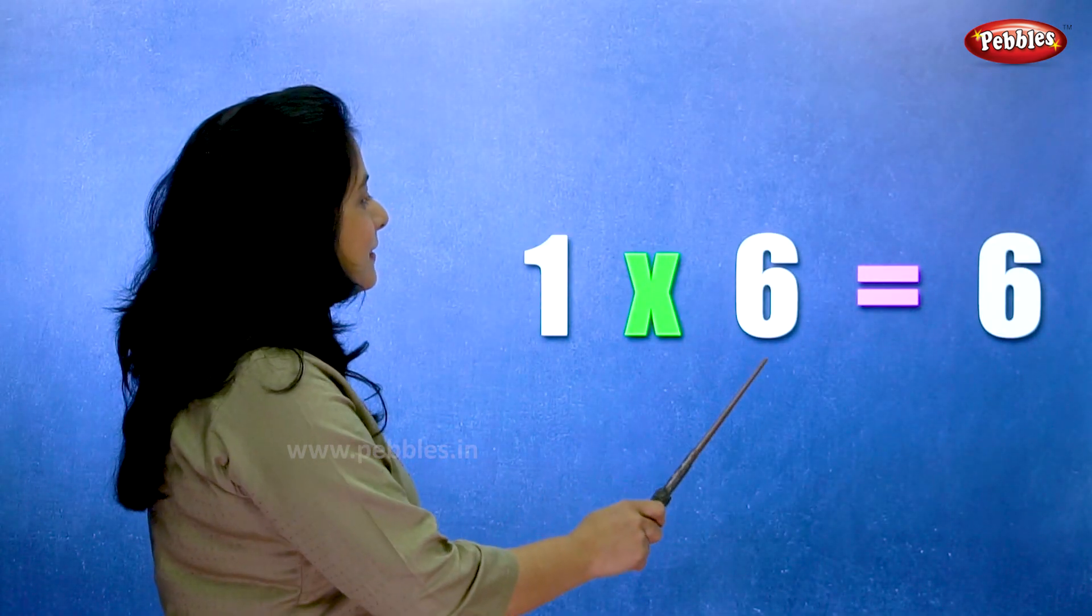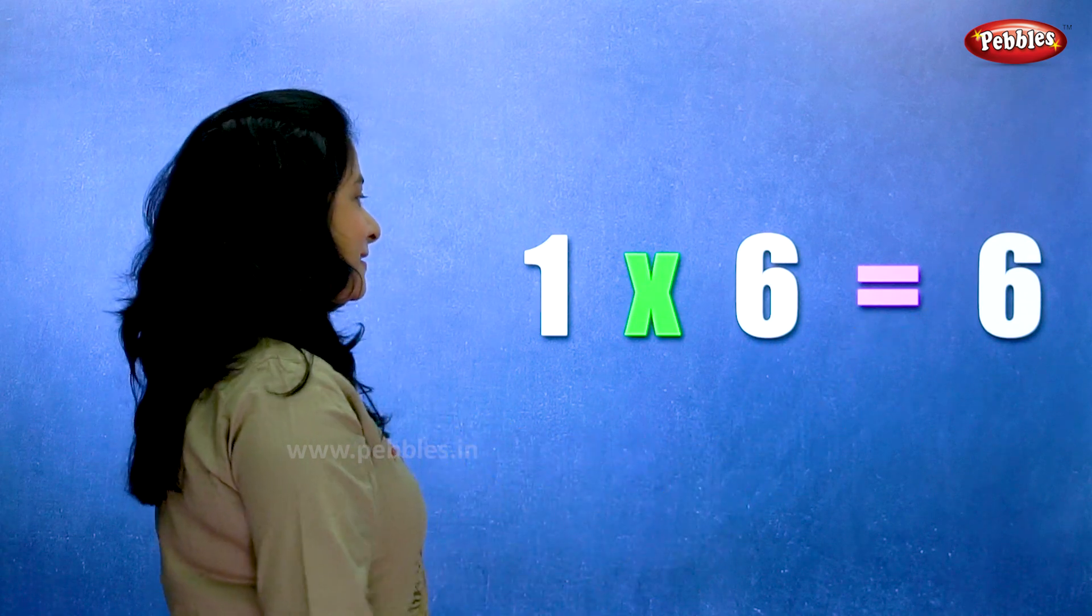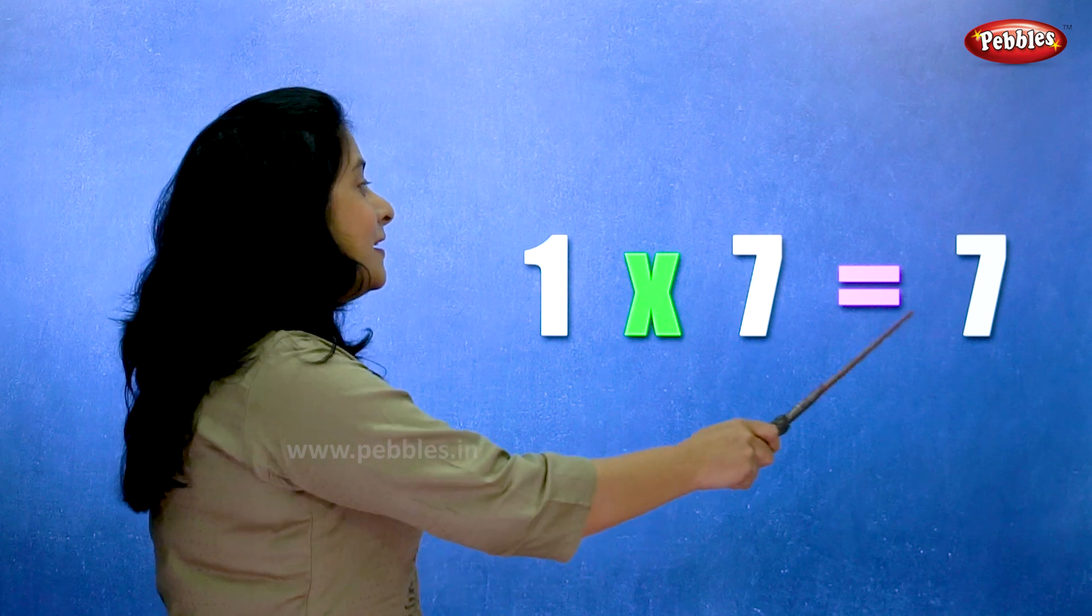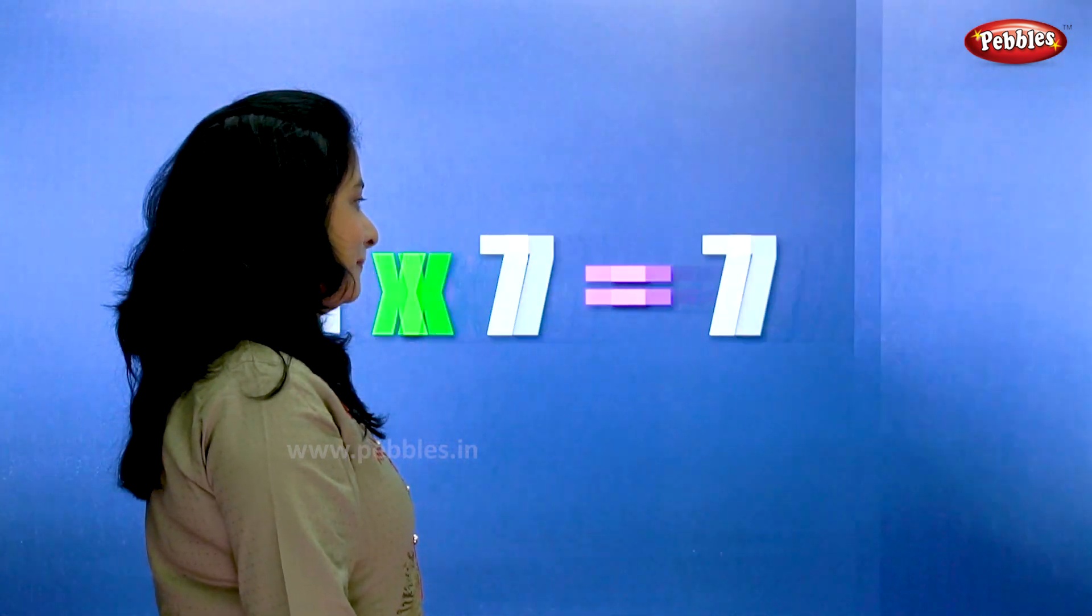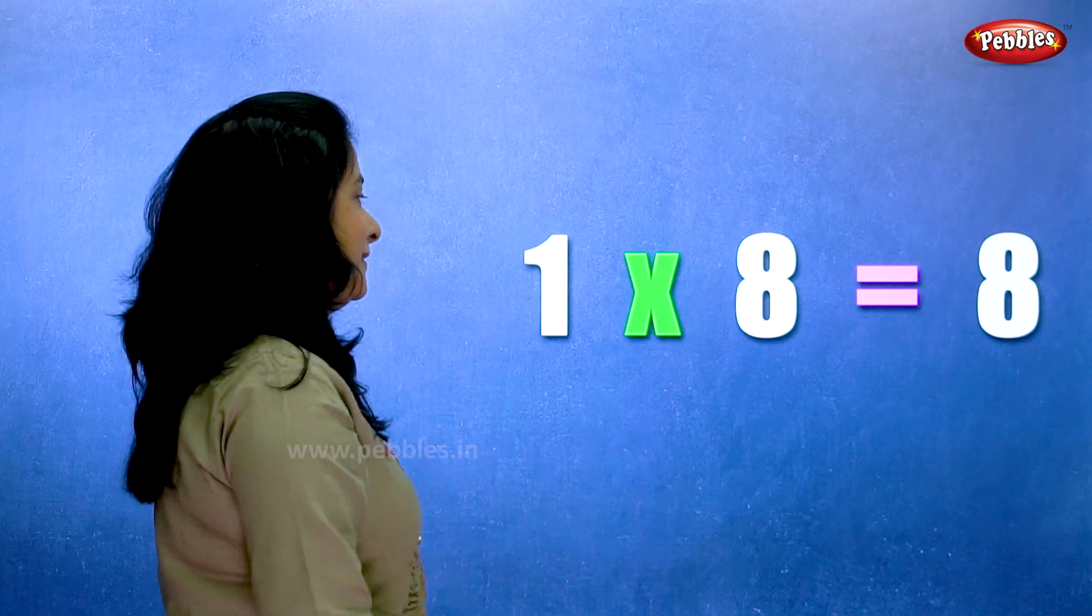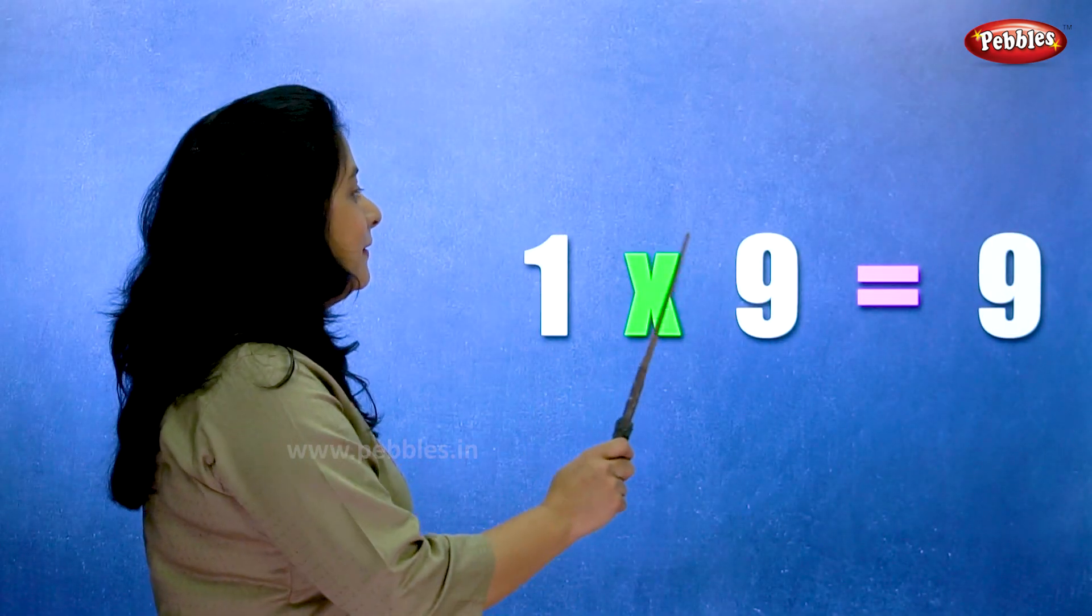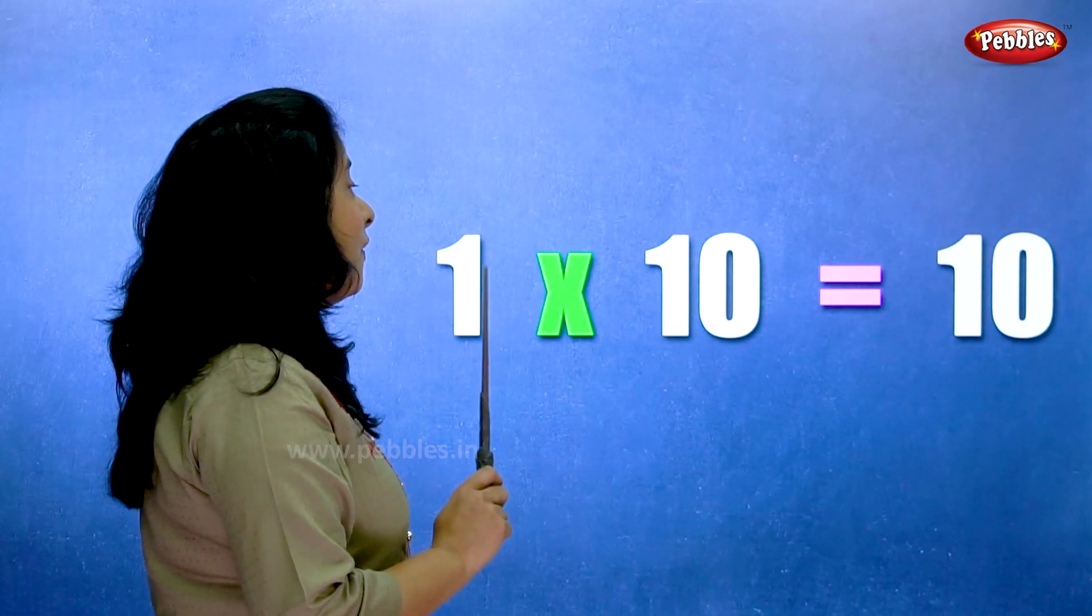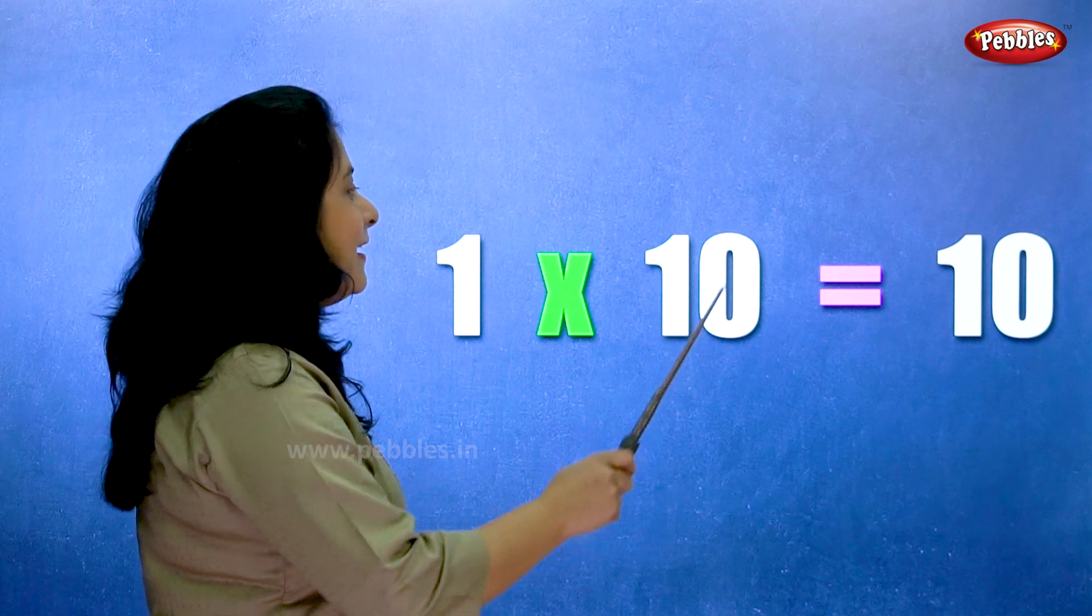1 6s are 6. 1 7s are 7. 1 8s are 8. 1 9s are 9. 1 10s are 10.